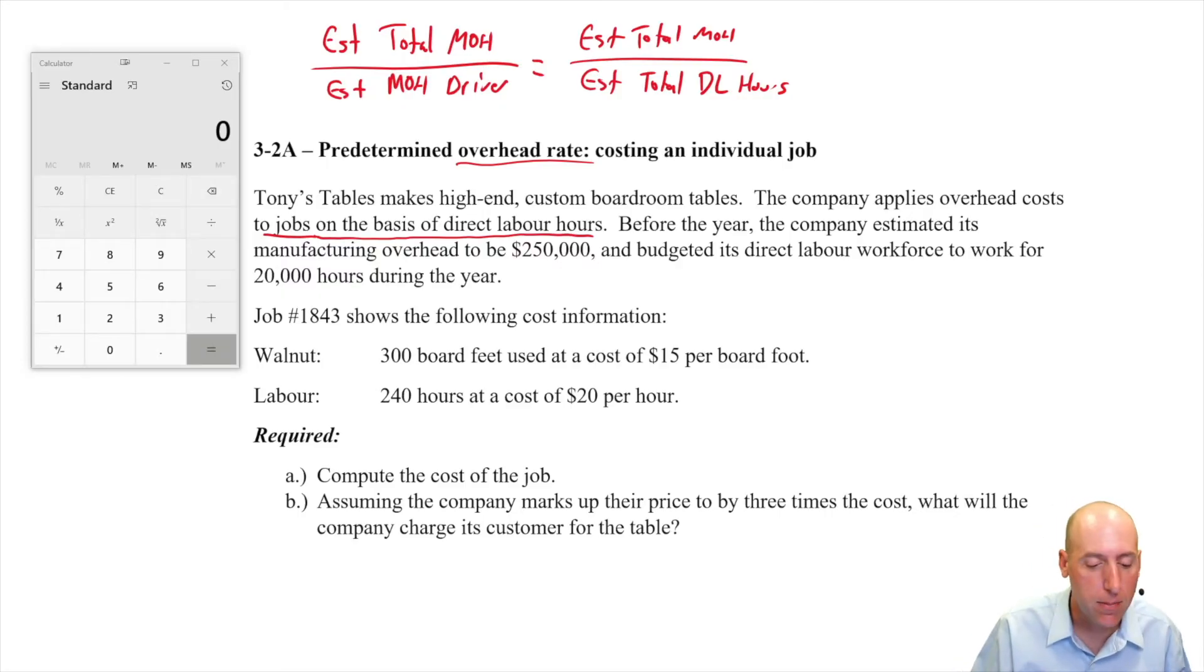Before the year, the company estimated its manufacturing overhead to be $250,000. Okay, so there's our numerator, the top of our ratio here, $250,000.